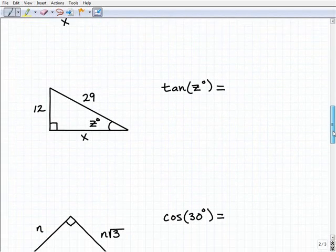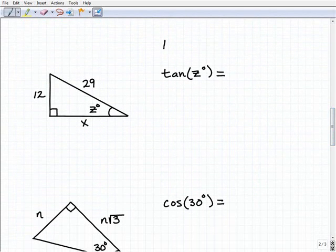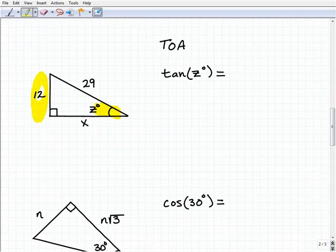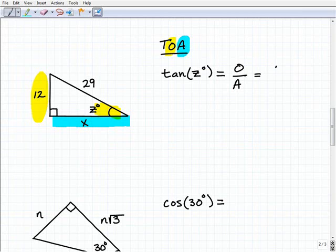Let's move on to tangent. This is TOA, the opposite over the adjacent. Now here my angle's in this corner. What is the opposite side? Well this is the opposite side right here, 12, and my adjacent side next to angle z is going to be this right here, that x. So TOA is the opposite over the adjacent, or in this case it'd be 12 over x.